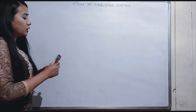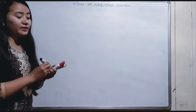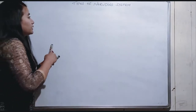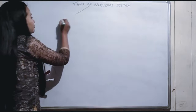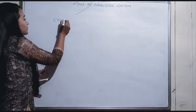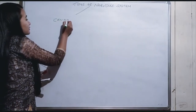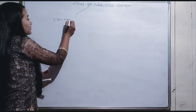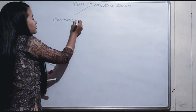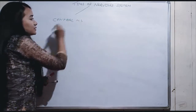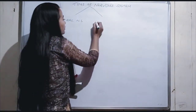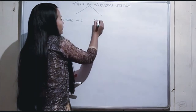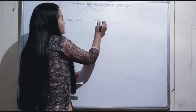We can divide the nervous system into two main parts: the Central Nervous System and the Peripheral Nervous System.